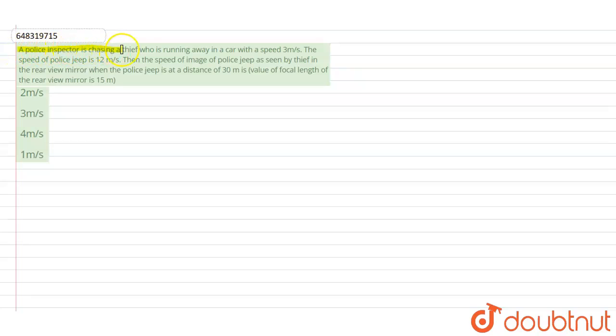A police inspector is chasing a thief who is running away in a car with a speed of 3 meters per second. The speed of the police jeep is 12 meters per second. The police jeep is at a distance of 30 meters. The focal length of the rear view mirror is 15 meters. We need to find the speed of the image of the police jeep as seen by the thief in the rear view mirror.